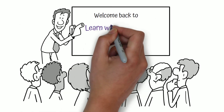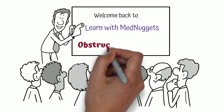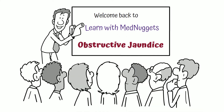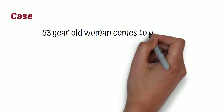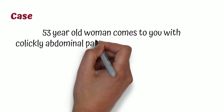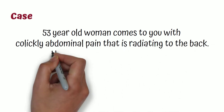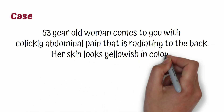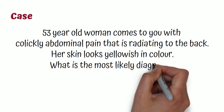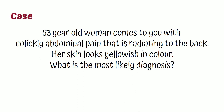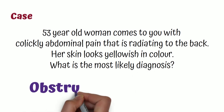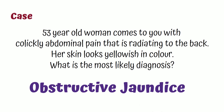Welcome back to Learn with Men Nuggets. In this video we are going to learn about obstructive jaundice. A 53-year-old woman comes to you with colicky abdominal pain that is radiating to the back. Her skin looks yellowish in color. What is the most likely diagnosis? Obstructive jaundice.